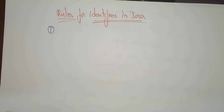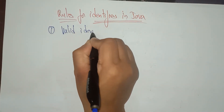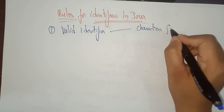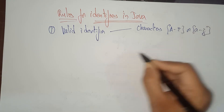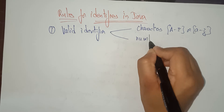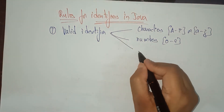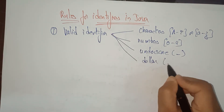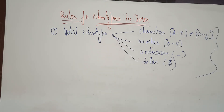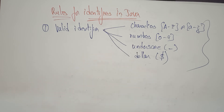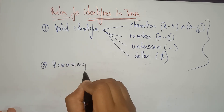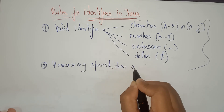Rule number one: a valid identifier can consist of characters — capital letters or small letters — numbers 0 to 9, underscore, and dollar symbol. Only these are valid. Any other special characters are not acceptable.